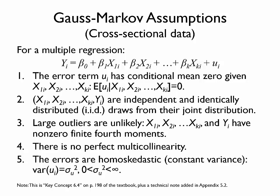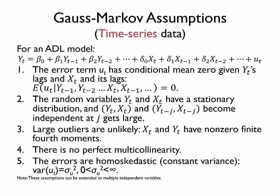These assumptions change slightly when we have time series data rather than cross-sectional data. For time series, we are now working with an ADL model — an autoregressive distributed lag model — which includes lags of the dependent variable y and the independent variable x. The most relevant change is assumption number two. The cross-sectional version assumed that variables were independent and identically distributed draws from a random distribution, but this new assumption is weaker because time series variables are rarely independent.